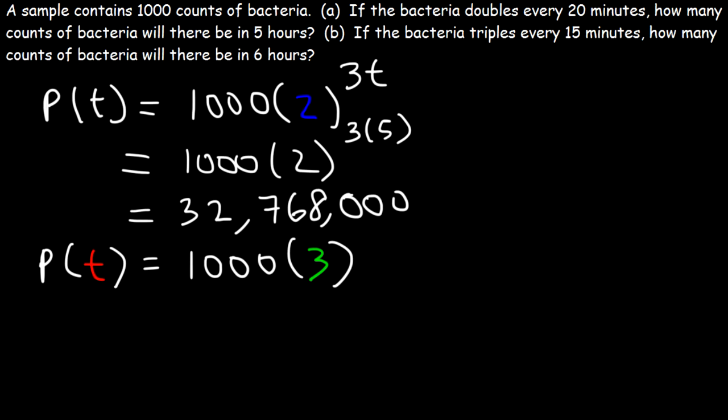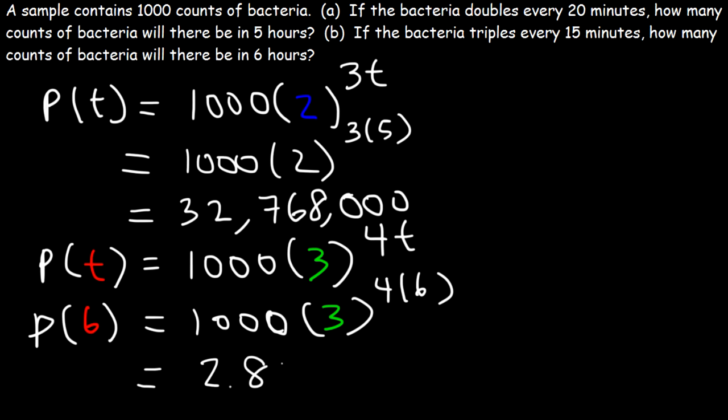So if it triples every 15 minutes, how many times does it triple per hour? 60 divided by 15 is 4. So it's going to triple 4 times in an hour. So now we can find the population after 6 hours. So it's going to be 1,000 times 3 raised to the 4 times 6. 4 times 6 is 24. 3 to the 24 is a big number times 1,000. We're going to have to write this in scientific notation. So it's going to be about 2.82 times 10 to the 14 counts of bacteria. And so that's the answer.